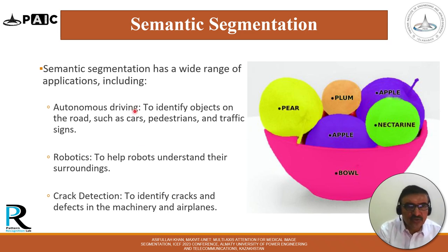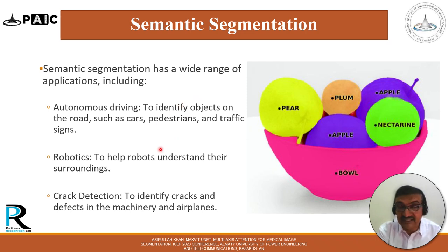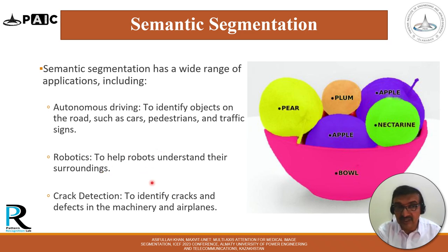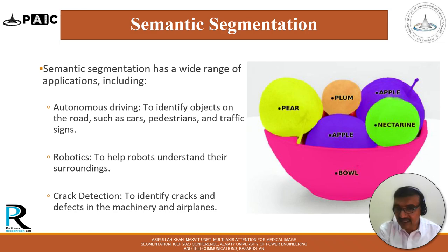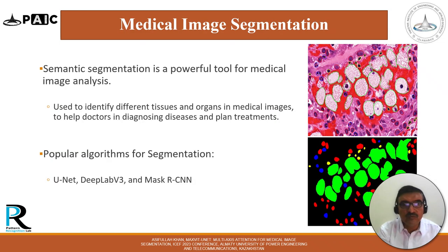Semantic segmentation has a wide range of applications, including autonomous driving to identify objects on the road such as cars, pedestrians, and traffic signs; robotics to help robots understand their surroundings; and crack detection or anomaly detection to identify cracks and defects in machinery and airplanes.